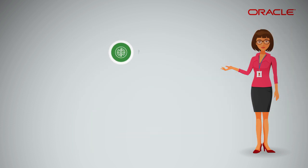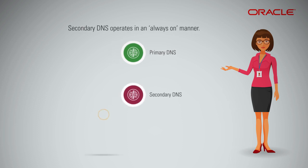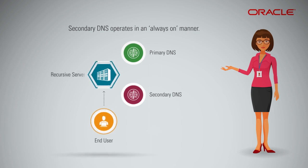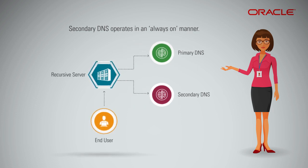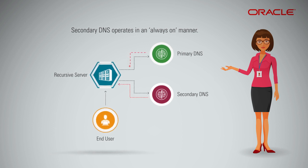To supplement your existing primary DNS infrastructure and increase the availability of name resolution, there is secondary DNS that operates in an always-on manner. When an end user's recursive server initiates a DNS request, both the existing DNS service and the secondary DNS will respond as soon as they receive the request. Whichever response reaches the recursive server first will be passed back to the end user, completing their request.